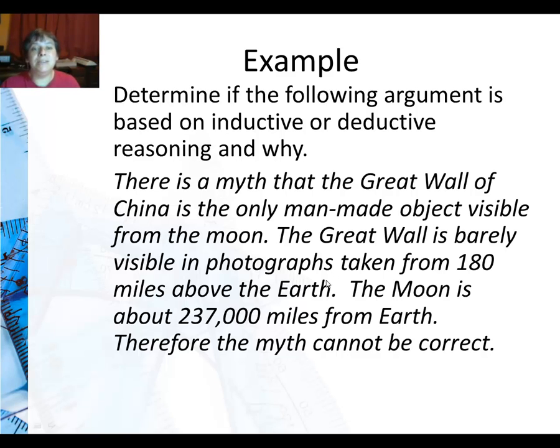In this next example we're looking at the myth that the Great Wall of China is the only man-made object visible from the moon. So they said okay here are some facts. The Great Wall is barely visible in photographs taken from 180 miles above the earth. The moon is about 237,000 miles from the earth. Therefore the myth cannot be correct.